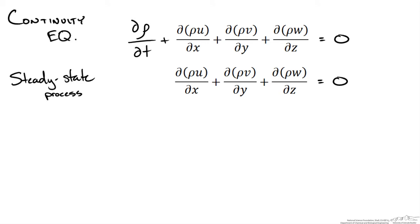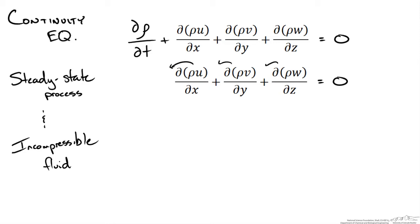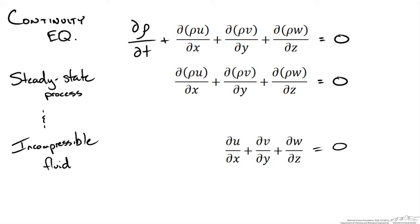For steady state flow and incompressible fluids, the density is not a function of position — it is constant. If density is constant we could pull it out of the differentials, and then if we divide everything by density it just cancels out, so we are left with the following. Going back to our mathematical operator, we could also write this form as the following.